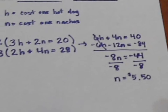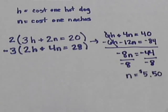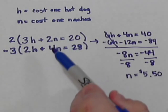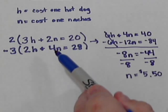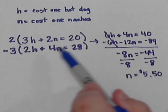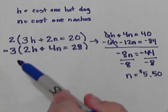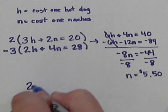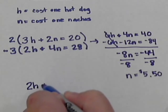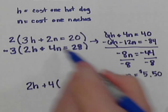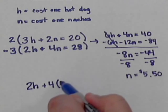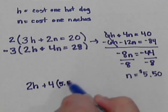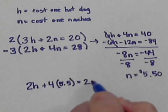We've got the nachos, so now we need to find the price of the hot dog. We can go back to either of these two equations. It doesn't matter which one. I'm just going to pick the second one, and we're going to go back before we multiplied by negative three. I'm going to have 2h plus 4n. Instead of putting the n in, we're going to put the 5.50, equals twenty-eight.